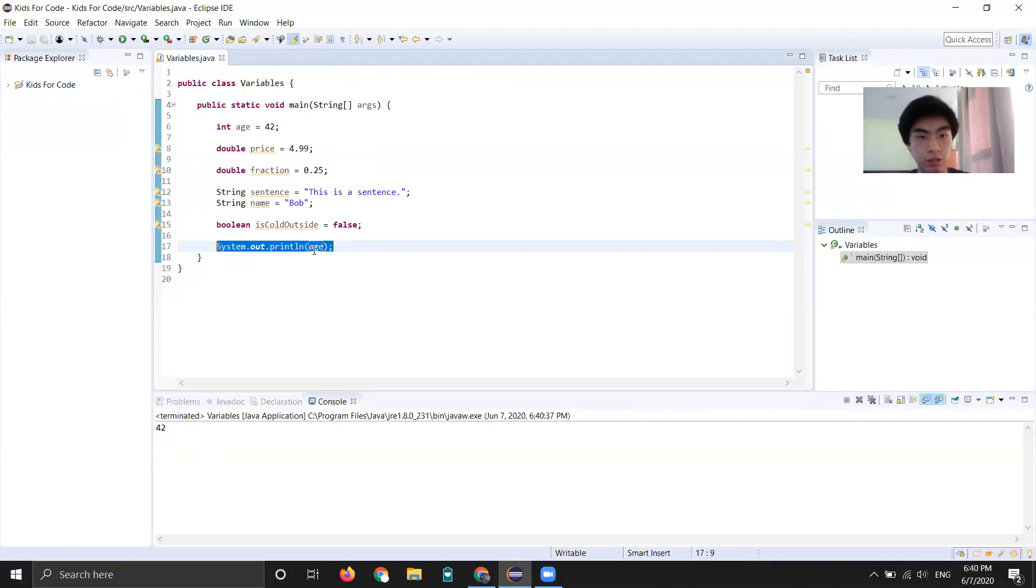So you can do that with doubles as well, strings, Boolean, it'll either print true or false. Now, one thing you have to be careful of is this, you have to make sure you initialize your variables. So if I make another variable here, and I don't set it equal to something, by the way, initialize means set it equal to something.